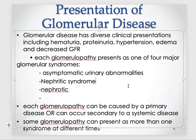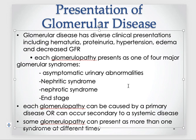Nephritic syndrome includes conditions such as acute glomerulonephritis and rapidly progressive glomerulonephritis. One of the outcomes of glomerulopathy can be nephrotic syndrome, and another outcome can be end-stage renal disease, also written as ESRD. End-stage renal disease is basically the result of chronic renal failure or any renal failure when it reaches its final stage.